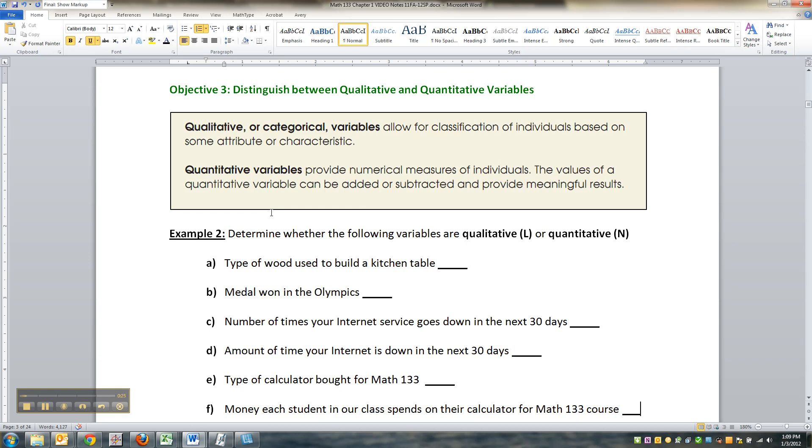Another good rule of thumb is can you take the average - the one where you add them all up and divide by how many there are. It's called the arithmetic mean, or the mean, which we'll cover in Chapter 3.